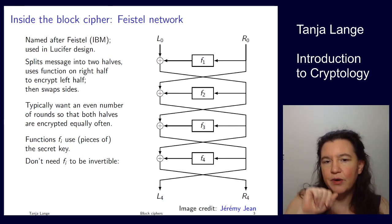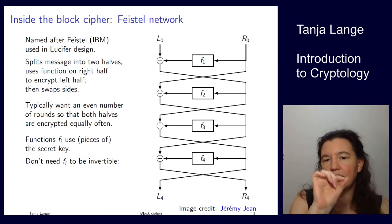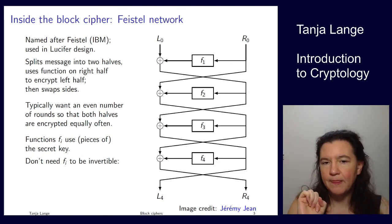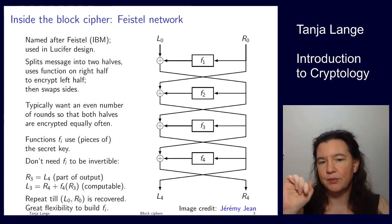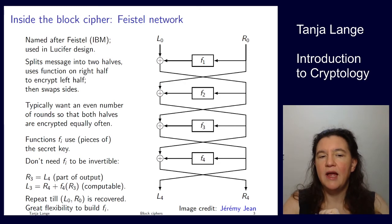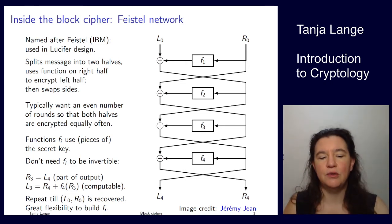The reason we can still decrypt is by tracing the values from the bottom up. In particular, L_4 is the same as R_3, and nothing happened at that step, so L_4 equals R_3. Then L_3 was XORed with something computed using F_4 on R_3. Since we know R_3 (it's the same as L_4), we can compute L_3. Then we know R_2 because it's the same as L_3, and therefore we can compute L_2, and eventually recover L_0 and R_0.